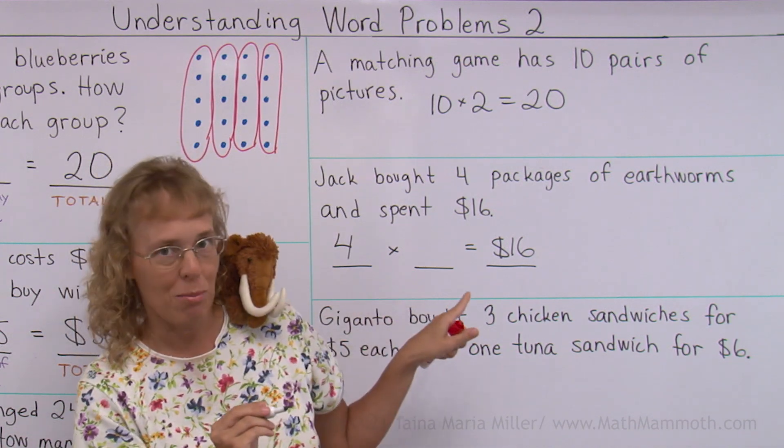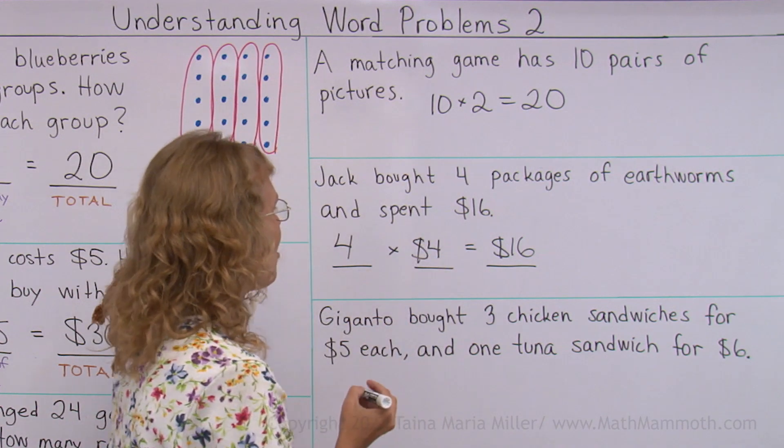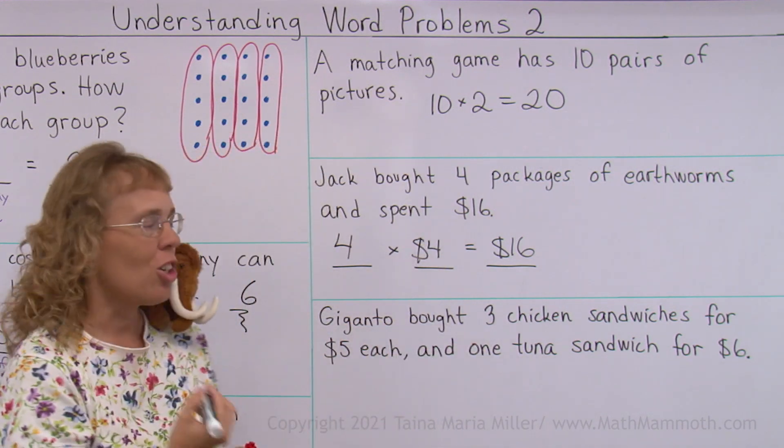Let's write a multiplication because it has many things that each cost the same. We don't know how much each costs. We do know the total cost and we do know how many he bought. Four packages times what number goes there? Aha! This is easy. Four dollars, right? Four times four dollars. So each package cost four dollars.